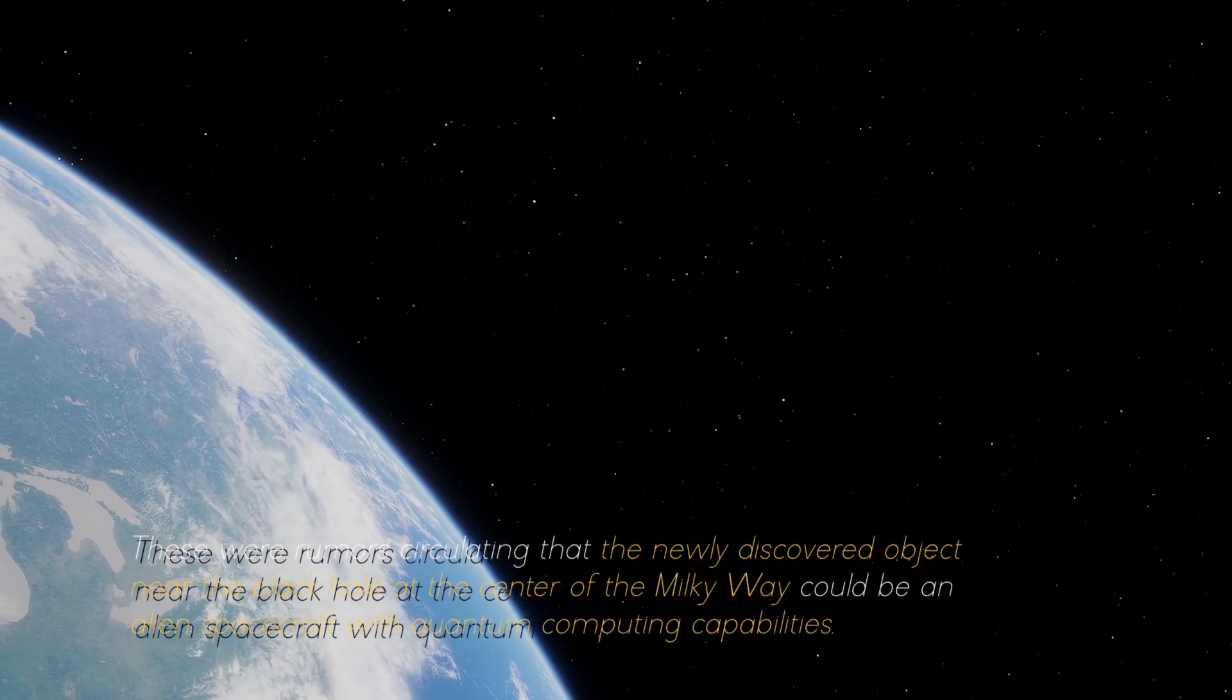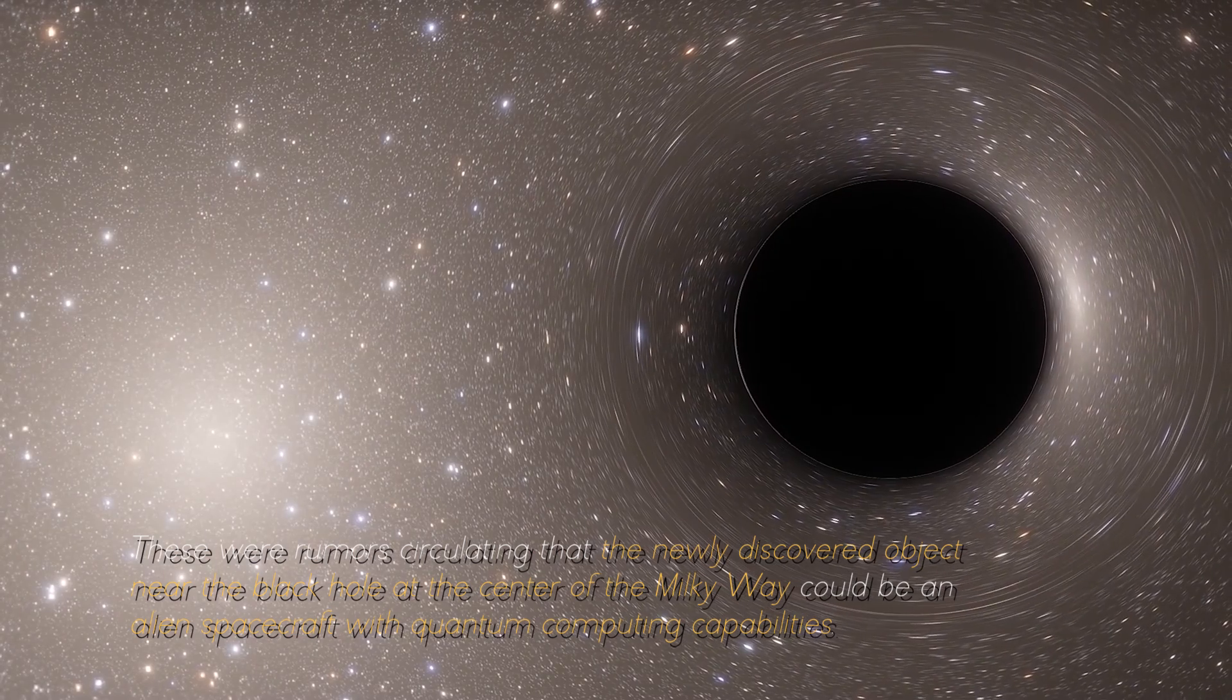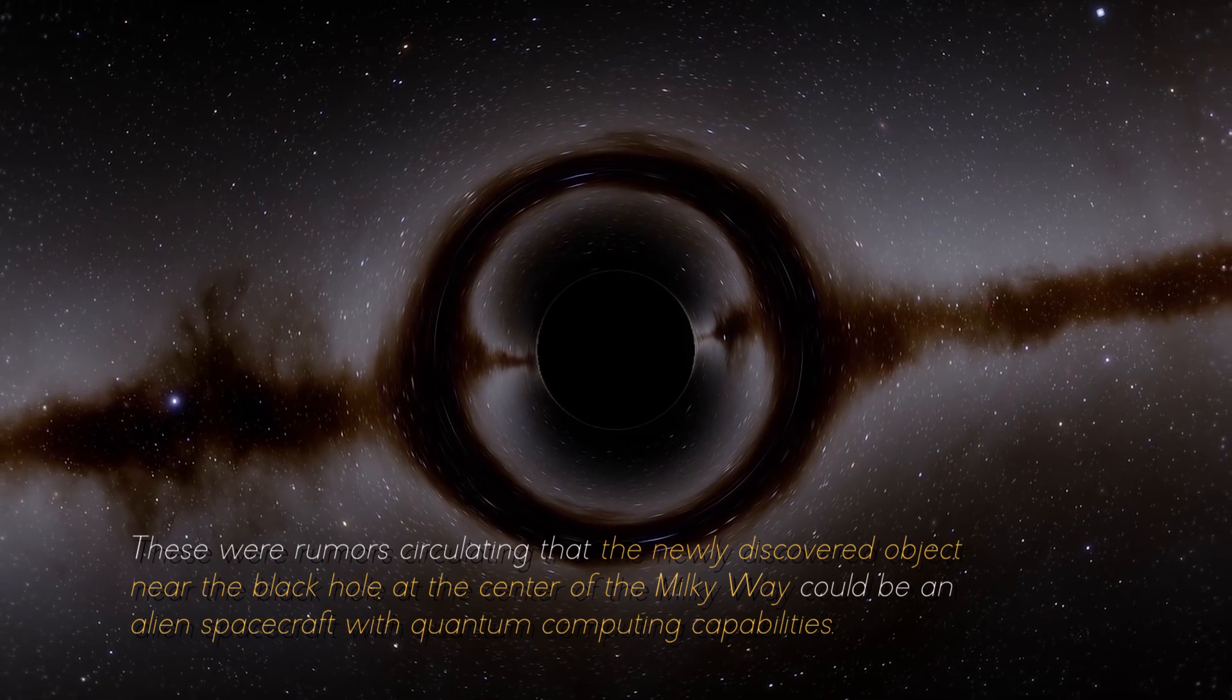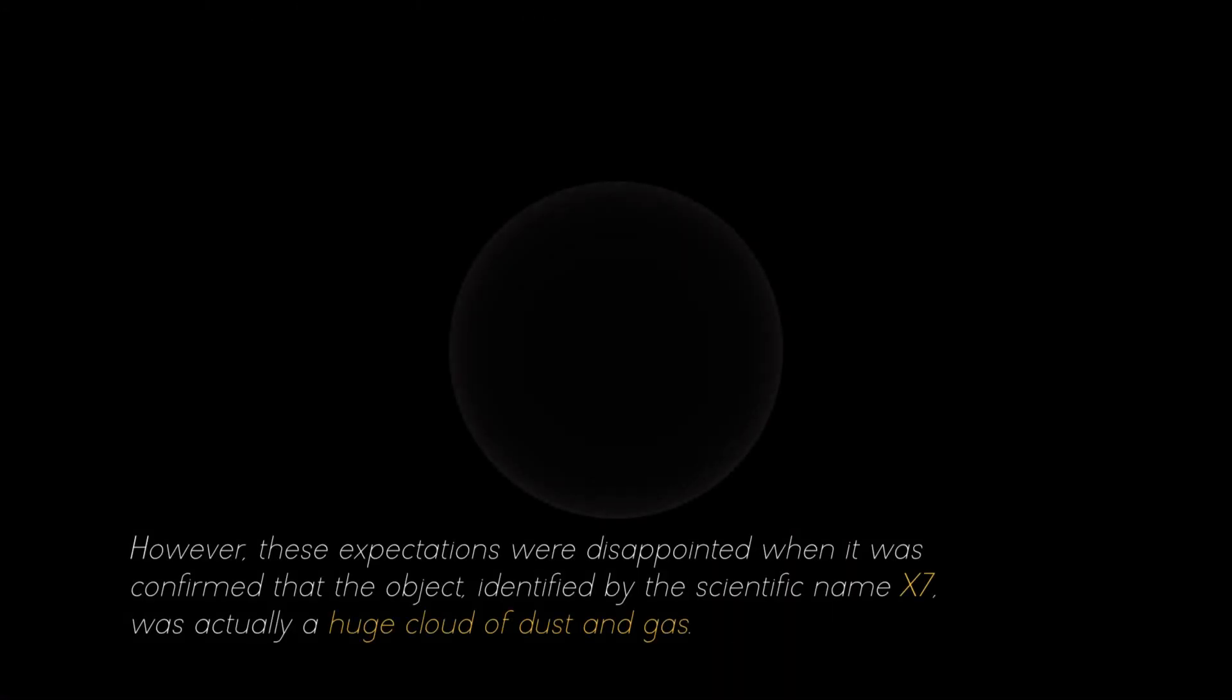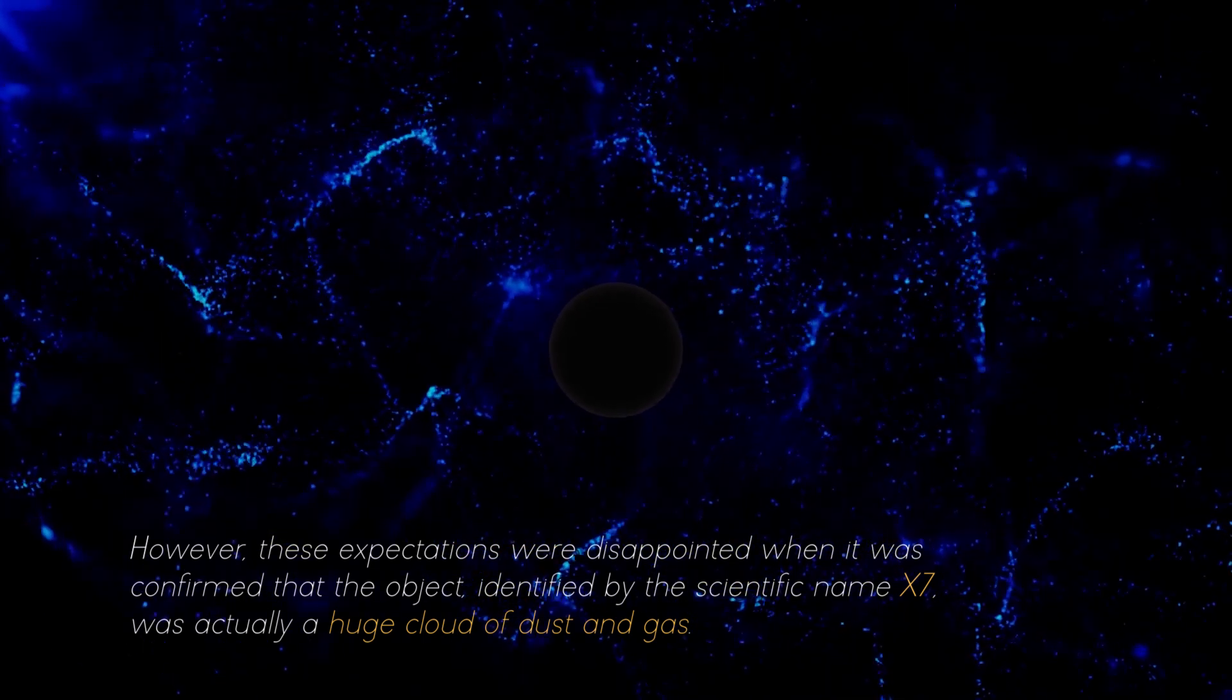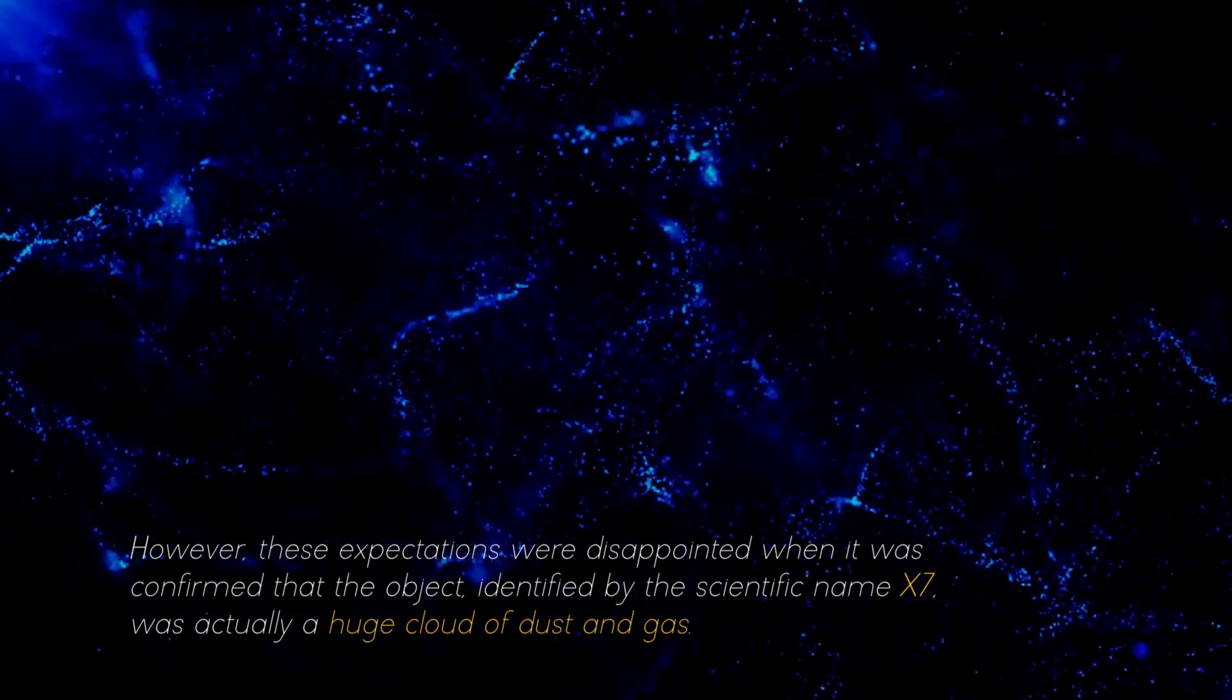There were rumors circulating that the newly discovered object near the black hole at the center of the Milky Way could be an alien spacecraft with quantum computing capabilities. However, these expectations were disappointed when it was confirmed that the object identified by the scientific name X7 was actually a huge cloud of dust and gas.